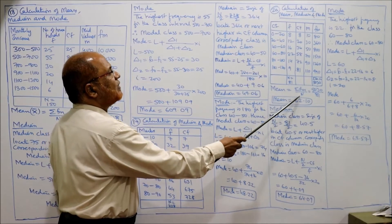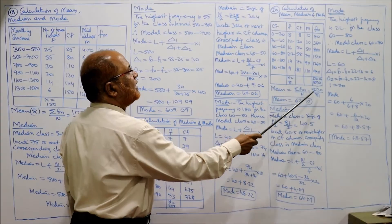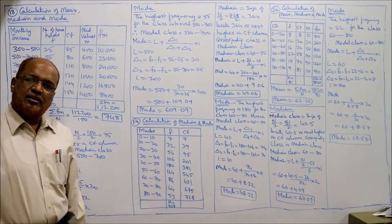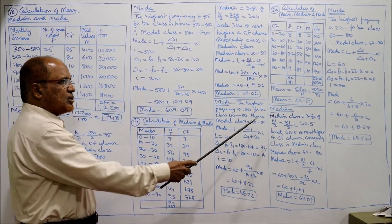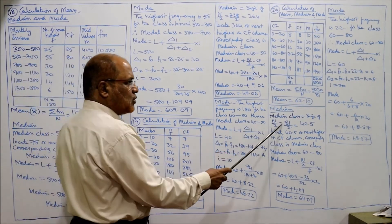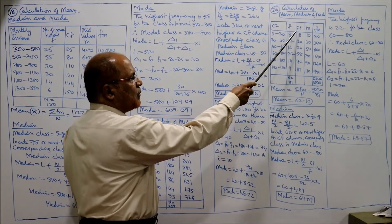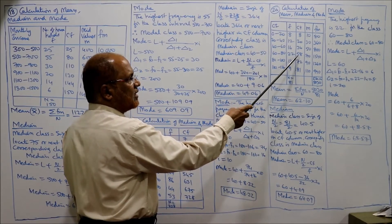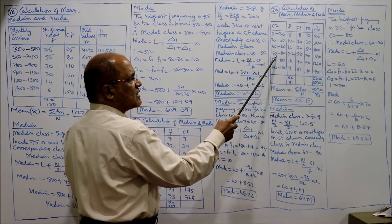Mean = ΣFM / N = 5030 / 81 = 62.10. That is the mean. Now median class: N/2 = 81/2 = 40.5. Look at 40.5 in the CF column — the next higher is 58, corresponding to the class 60–80. So the median class is 60–80.